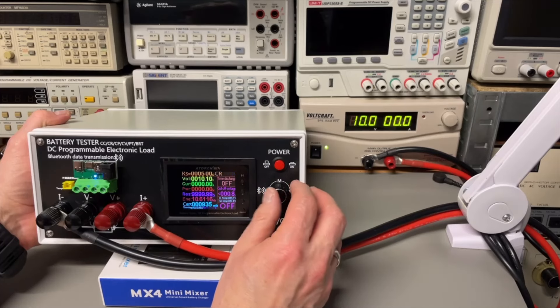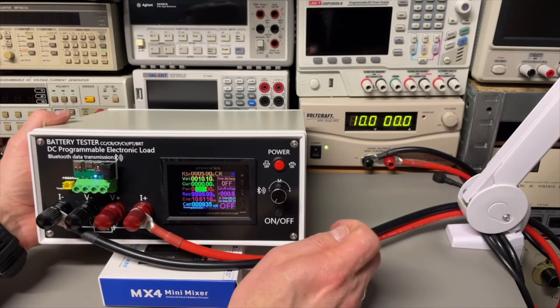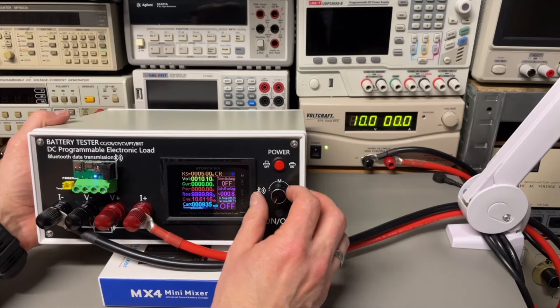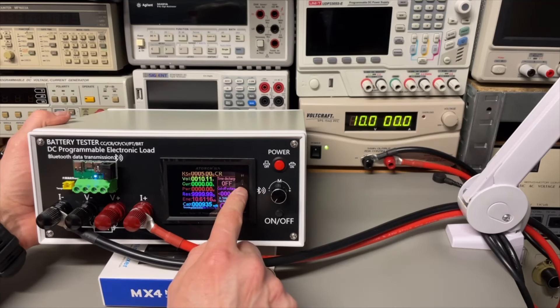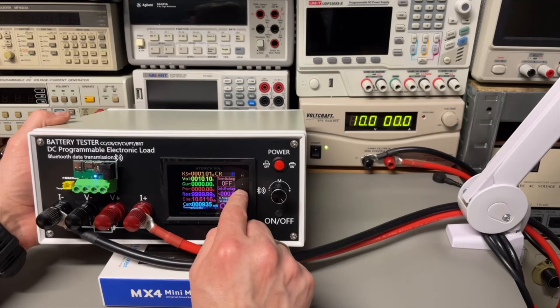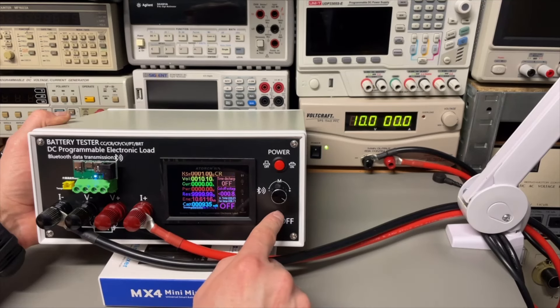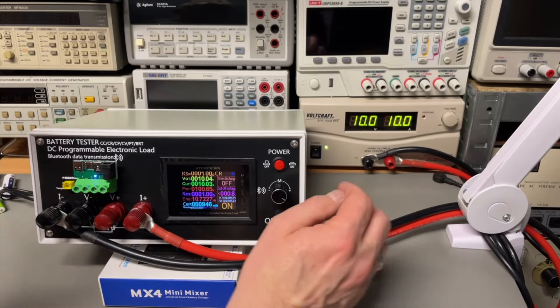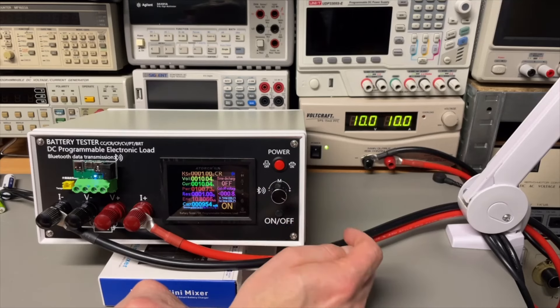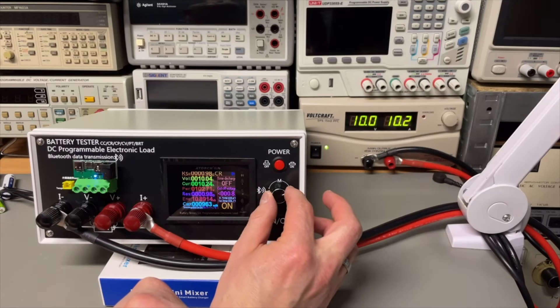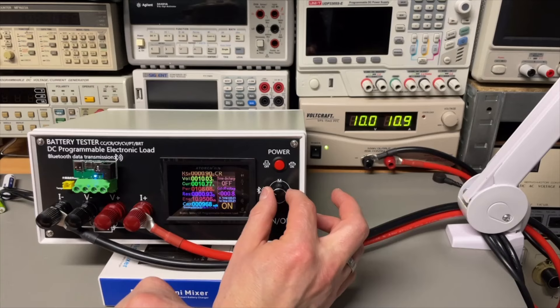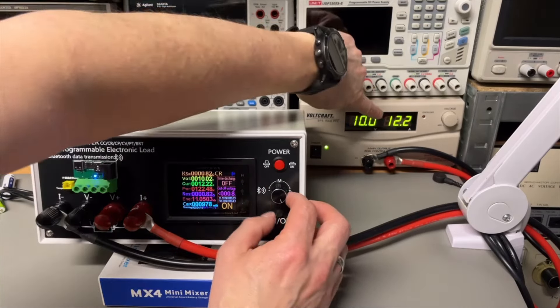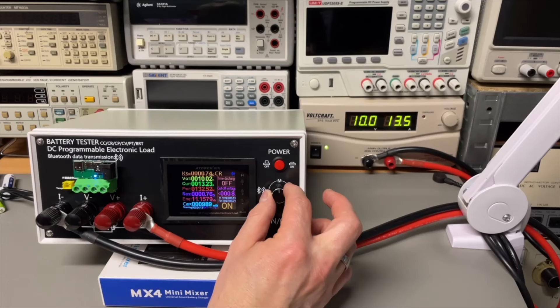So what if we do constant resistance? Let's do 1 ohm. Then at 10 volts I probably should have around 10 amps - yes I have. Let's lower the resistance. You can see here that it is actually changing the resistance. I wonder what is the lowest.